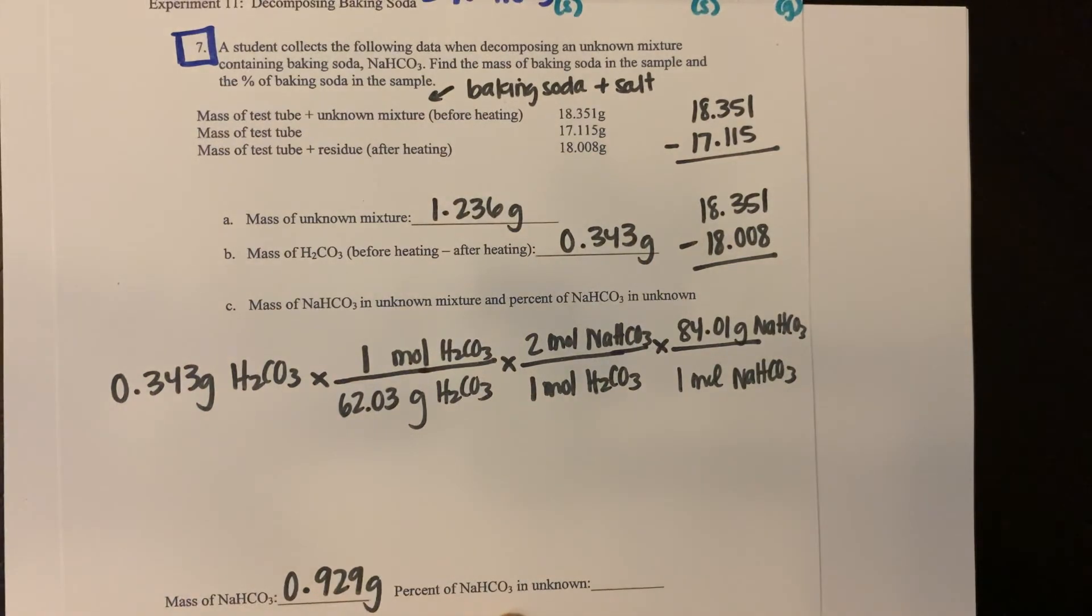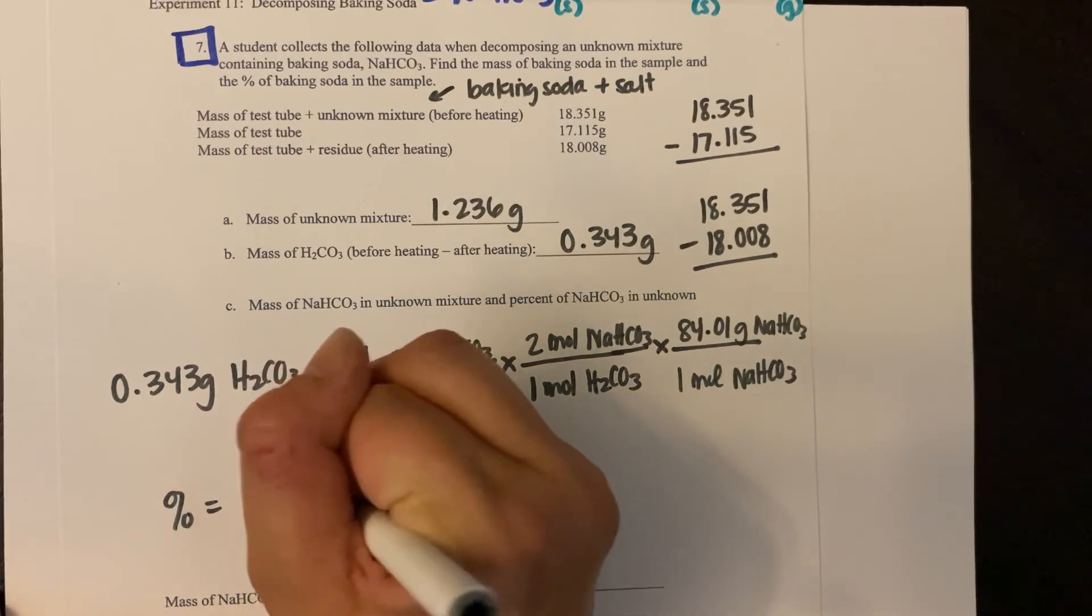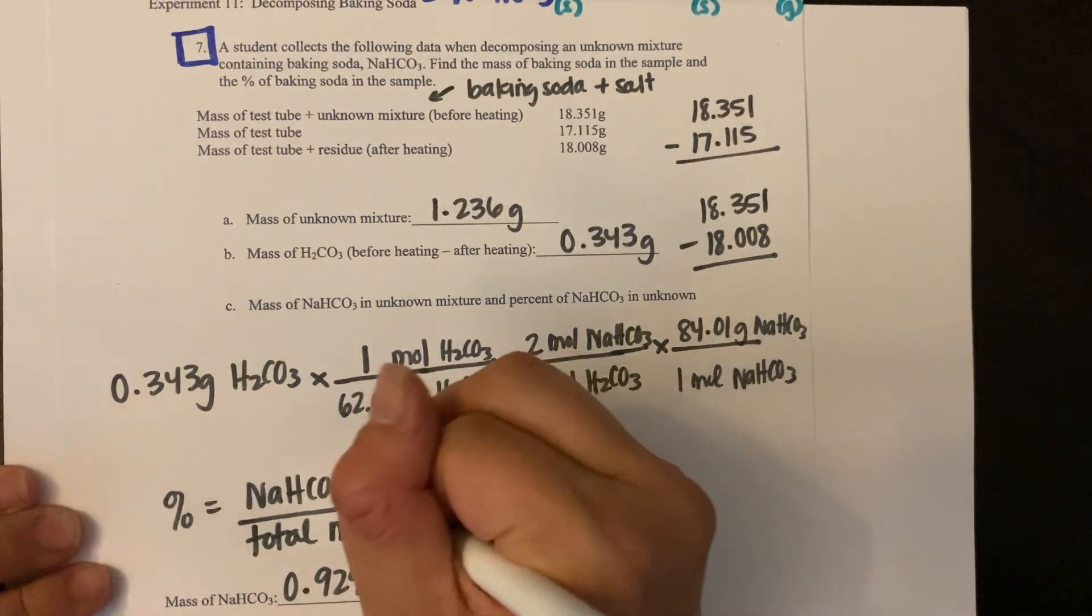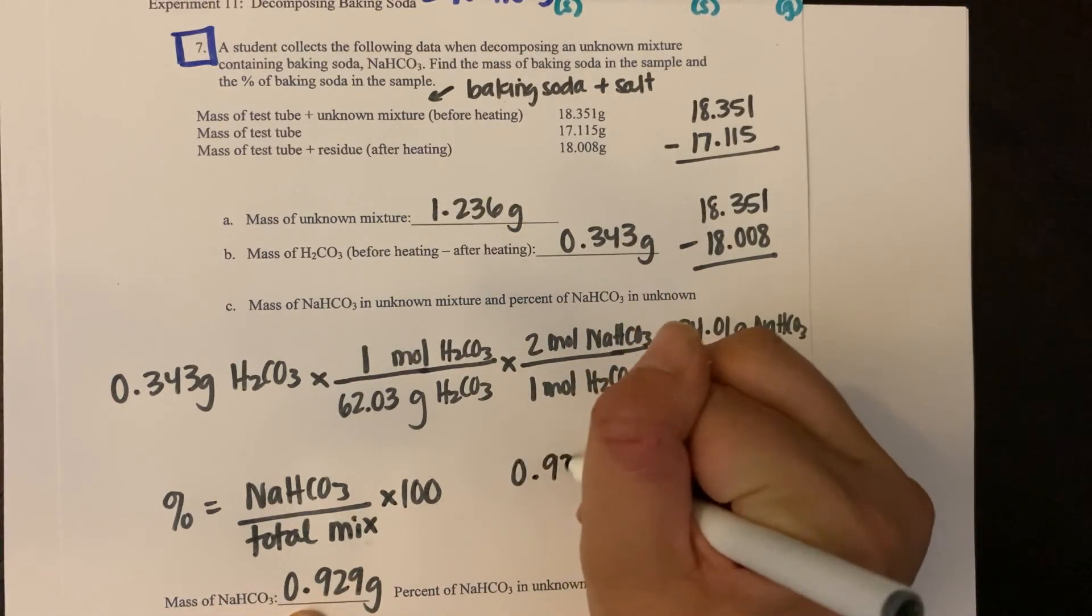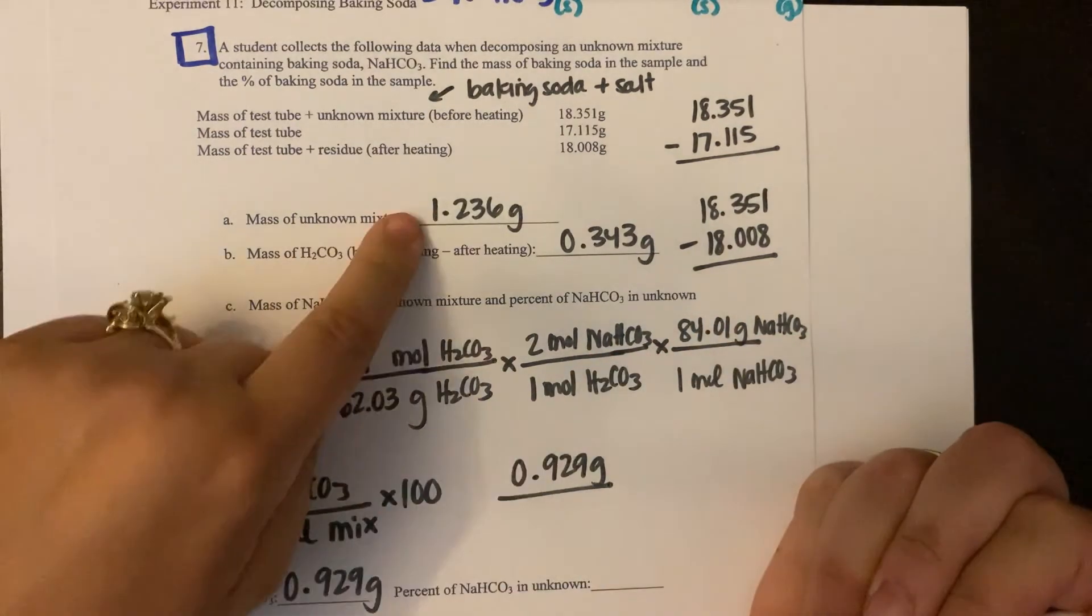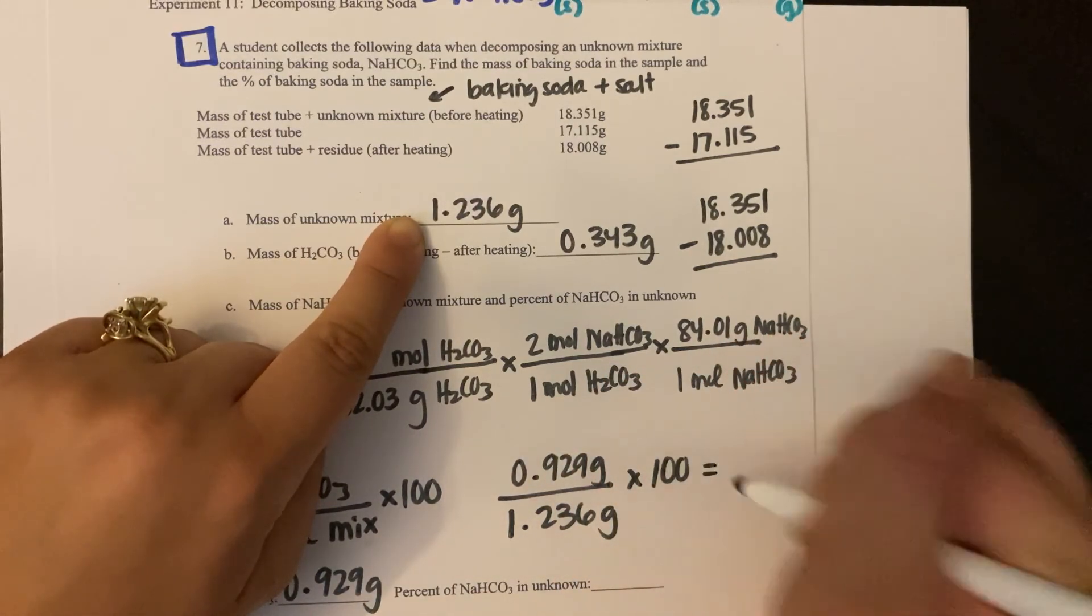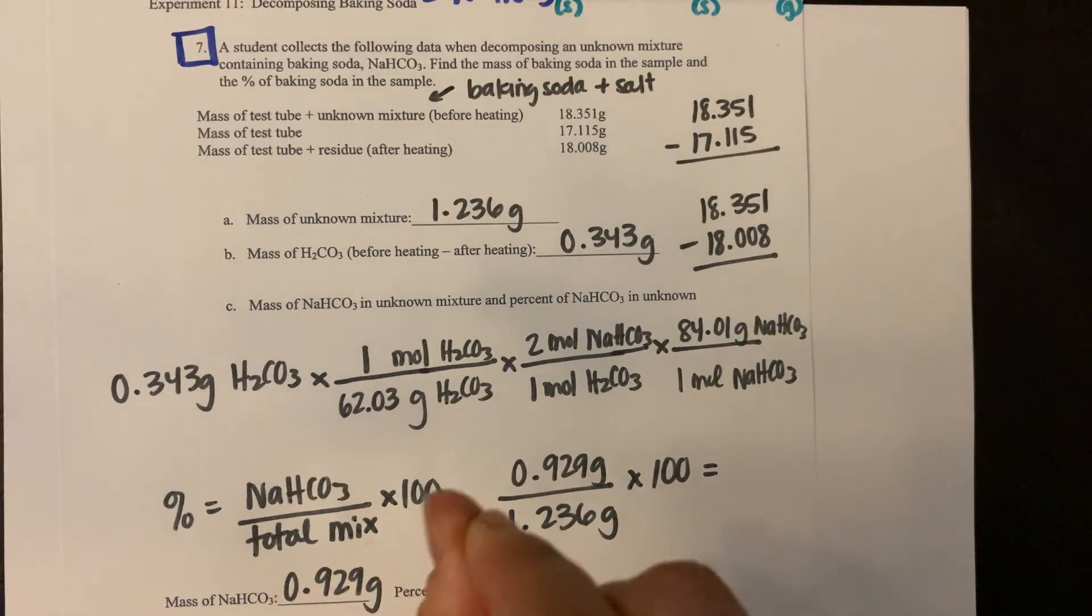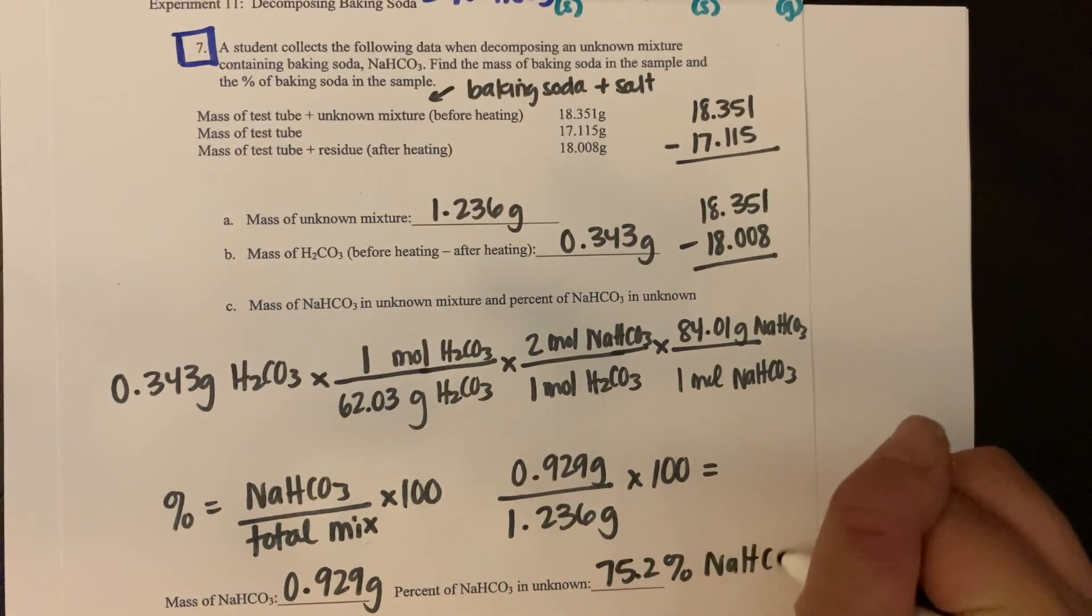So now it's asking to find the percent of sodium bicarbonate in my unknown. That's really easy. For my percent, I'm going to take my mass of NaHCO3 divided by my total mixture, and since it's a percent, you'll multiply by 100. So the mass of my NaHCO3, 0.929 grams, divided by my total, 1.236 grams, times 100 equals. And grams would cancel out, which makes sense because we're getting a percent, so we don't actually want a unit, we just want the percentage. And if I did this correctly, I would get 75.2 percent NaHCO3.